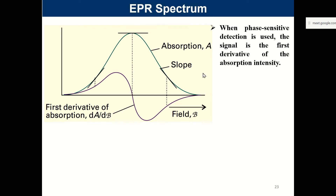Good morning. We had a brief introduction of EPR in the last class. As I told you, once you have understood NMR — nuclear magnetic resonance — then you can also understand electron magnetic resonance, paramagnetic resonance. It becomes much easier. We have already done a lot of things in NMR, so the only difference that we found here is in the appearance of the spectrum.